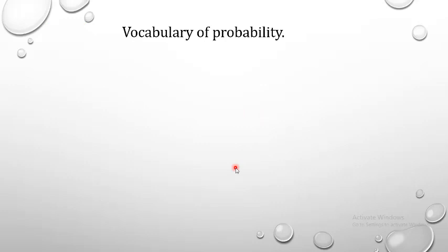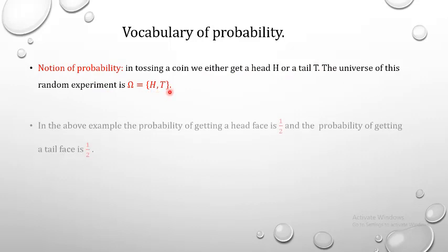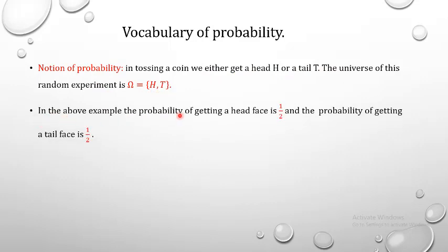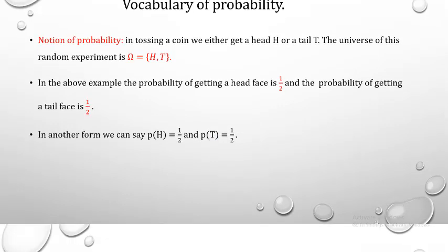Vocabulary of probability — notion of probability: in tossing a coin, we can either get a head or tail, so the universe omega = {H, T}. The probability of getting a head is 1/2, and the probability of getting a tail is 1/2.